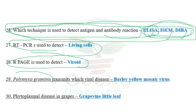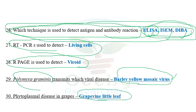The next question: Polymyxa graminis transmits which viral disease? Barley yellow mosaic virus is definitely transmitted by Polymyxa graminis fungi. I don't remember the options, but as far as I recall, barley yellow mosaic virus was given in the options. The next question: phytoplasmal disease in grapes — among the options given, grapevine little leaf is the phytoplasmal disease in grapes, caused by a phytoplasma.